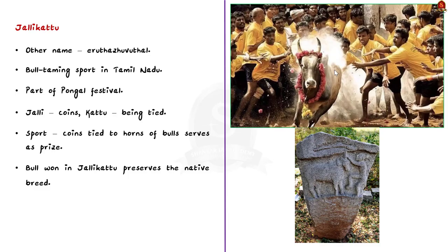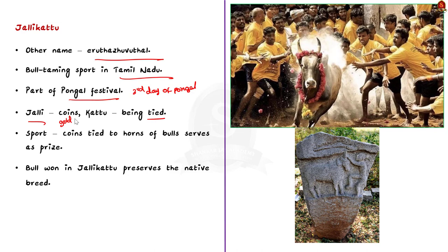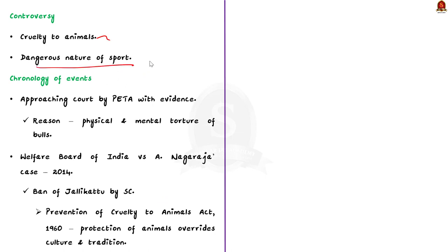Jallikattu, also known as Eruthazhuvuthal, is a bull-taming sport traditionally played in Tamil Nadu as part of the Pongal harvest festival, celebrated on Mattu Pongal Day — the third day of Pongal. The term Jallikattu comes from the Tamil words 'Jalli' (gold or silver coins) and 'Kattu' (tied), because coins are tied to the bull's horn as the prize for taming the bull. If no one tames the bull, the bull wins and is served with cows to preserve the native breed. The sport has been practiced for around 2,500 years but has been contested due to concerns over animal cruelty and danger to participants.